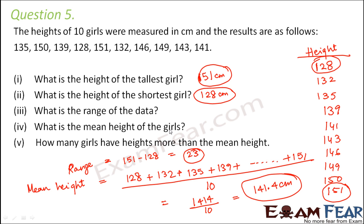How many girls have heights more than the mean height? So how many heights are greater than 141.4? So all the heights starting from 143, all these heights, that is 1, 2, 3, 4, 5. So there are 5 girls who have a height greater than the mean height. So these are the girls: 1, 2, 3, 4, 5. So their heights are greater than 141.4 centimeters.